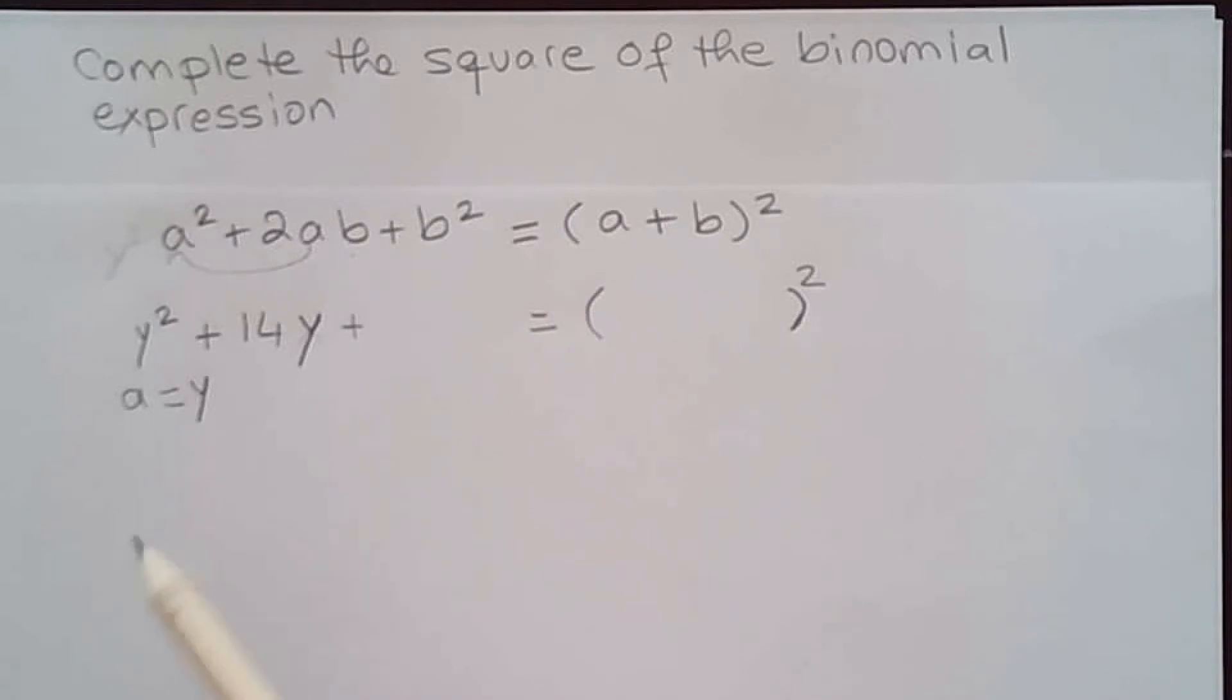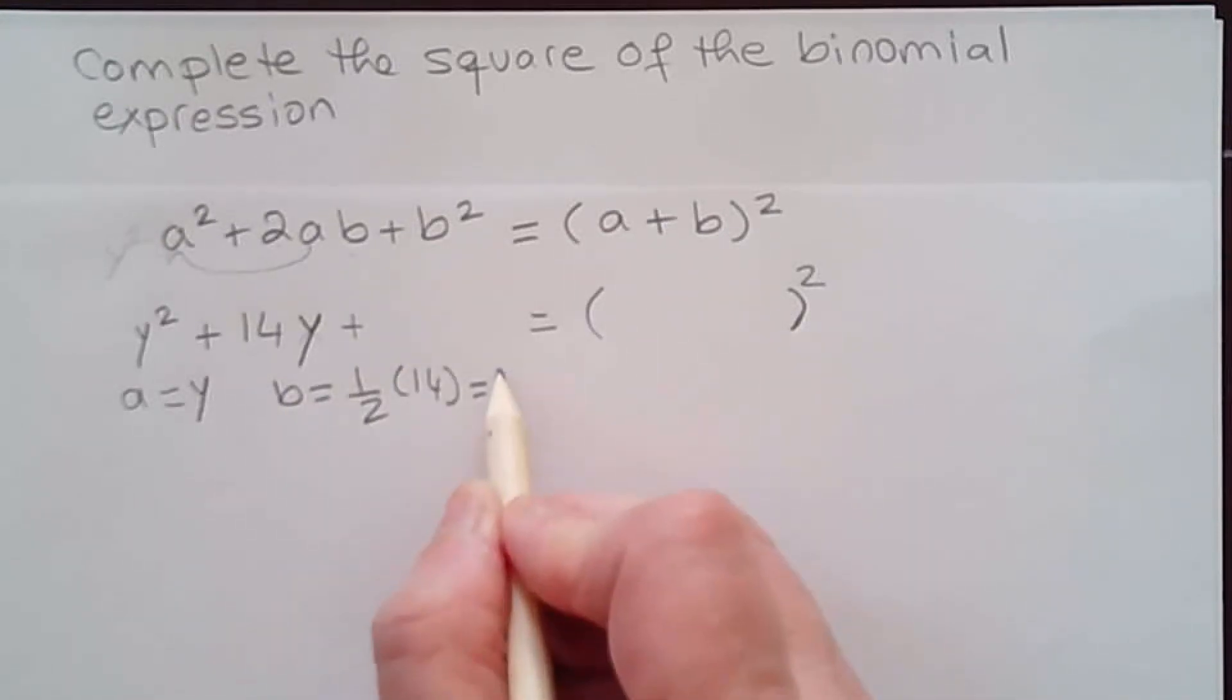The number here, 14, is none other than 2b. So in order to find b you always look at the middle term. b is always half whatever the coefficient here. So b is half of 14. That means 14 divided by 2 is none other than 7.